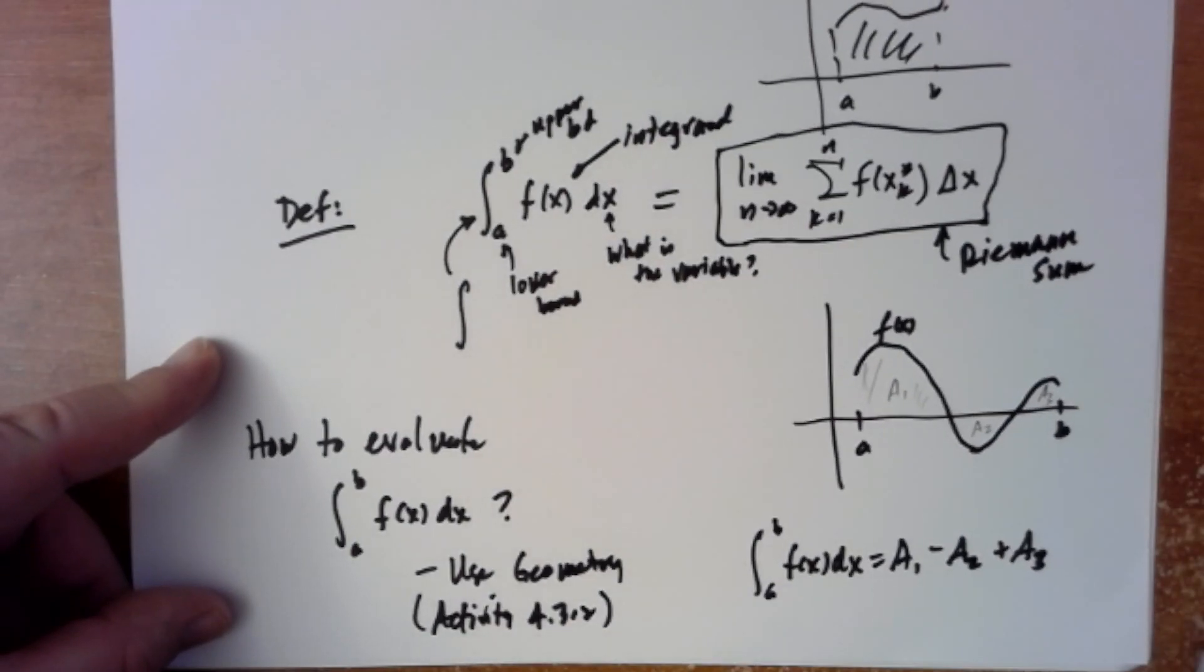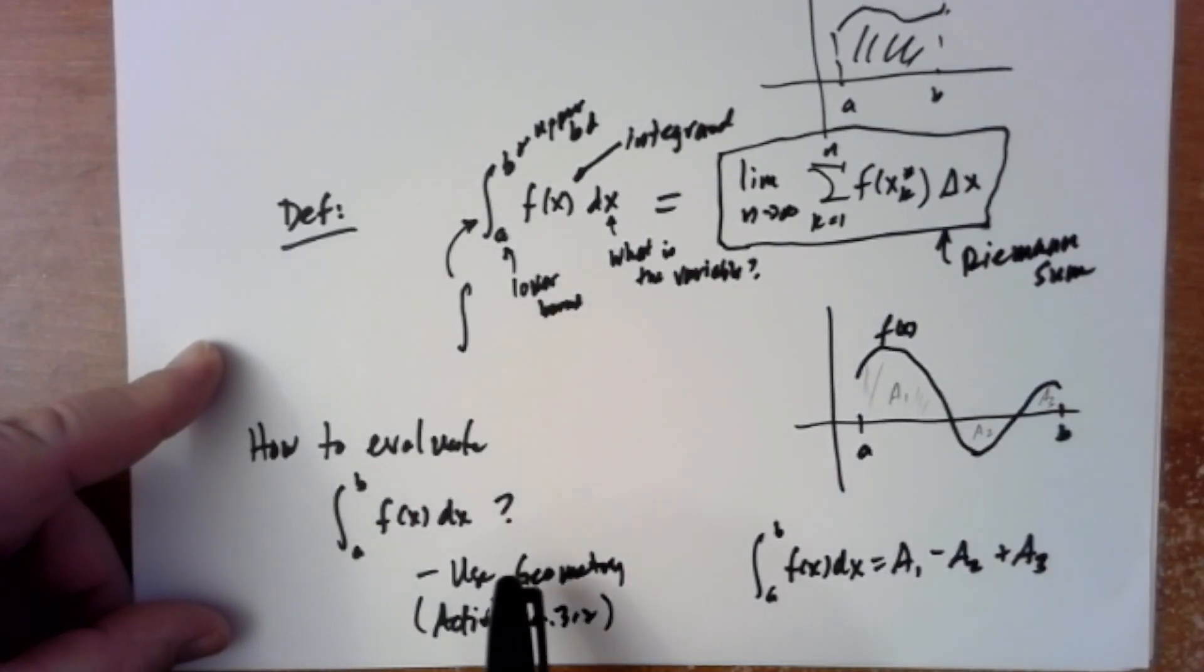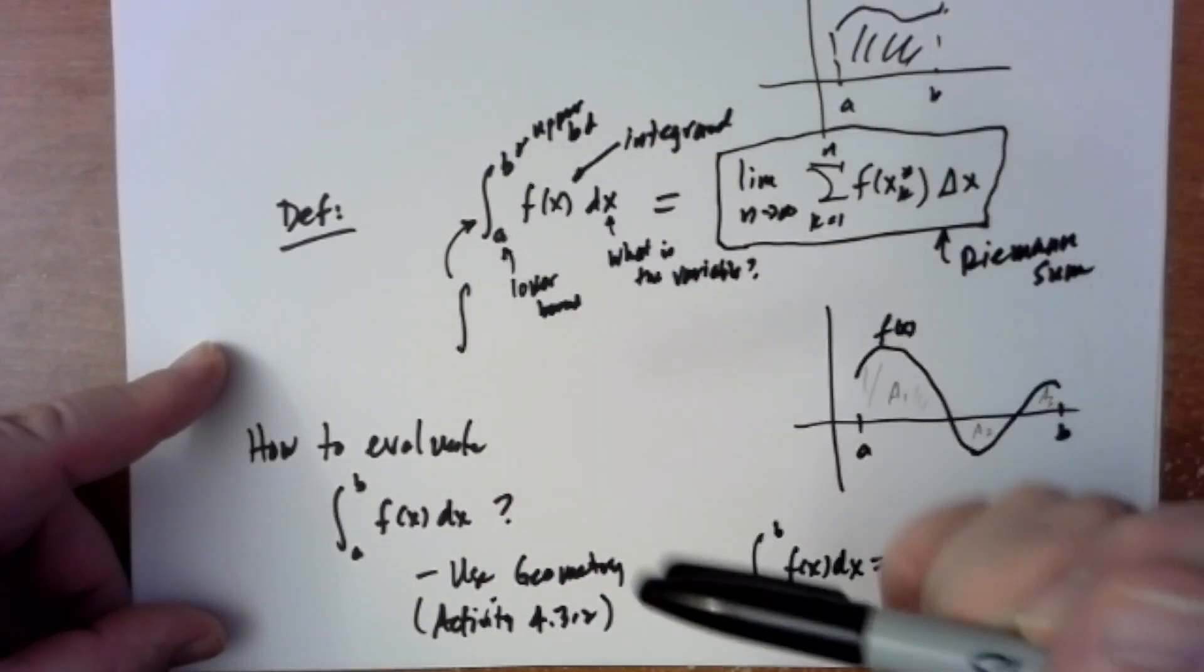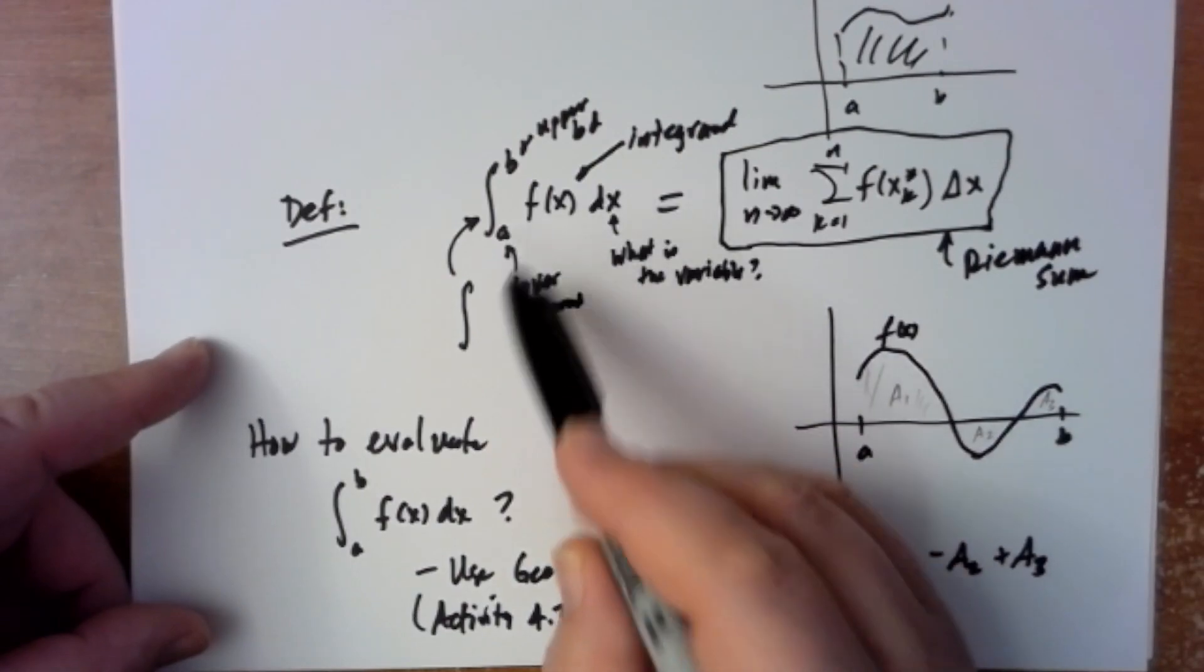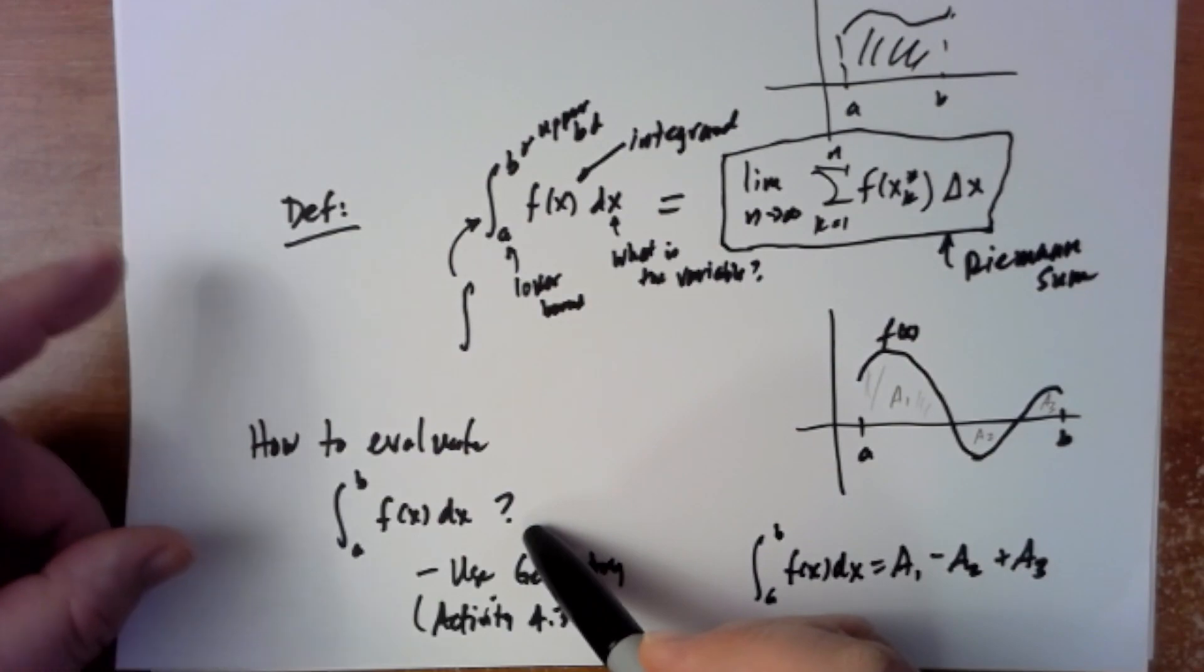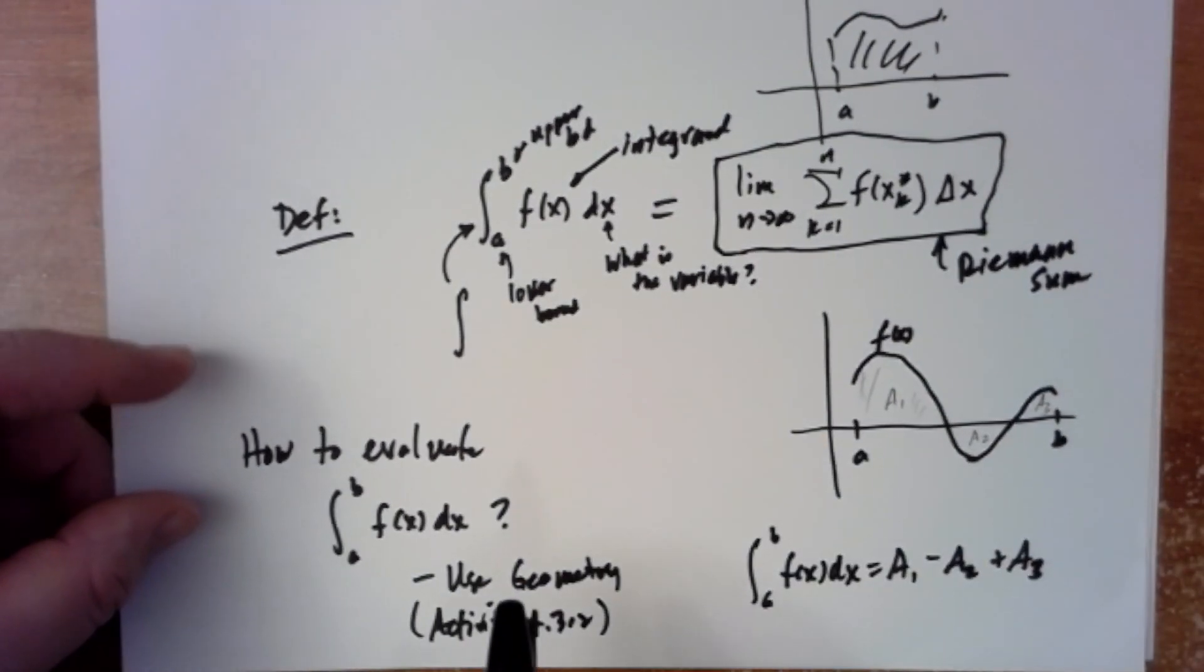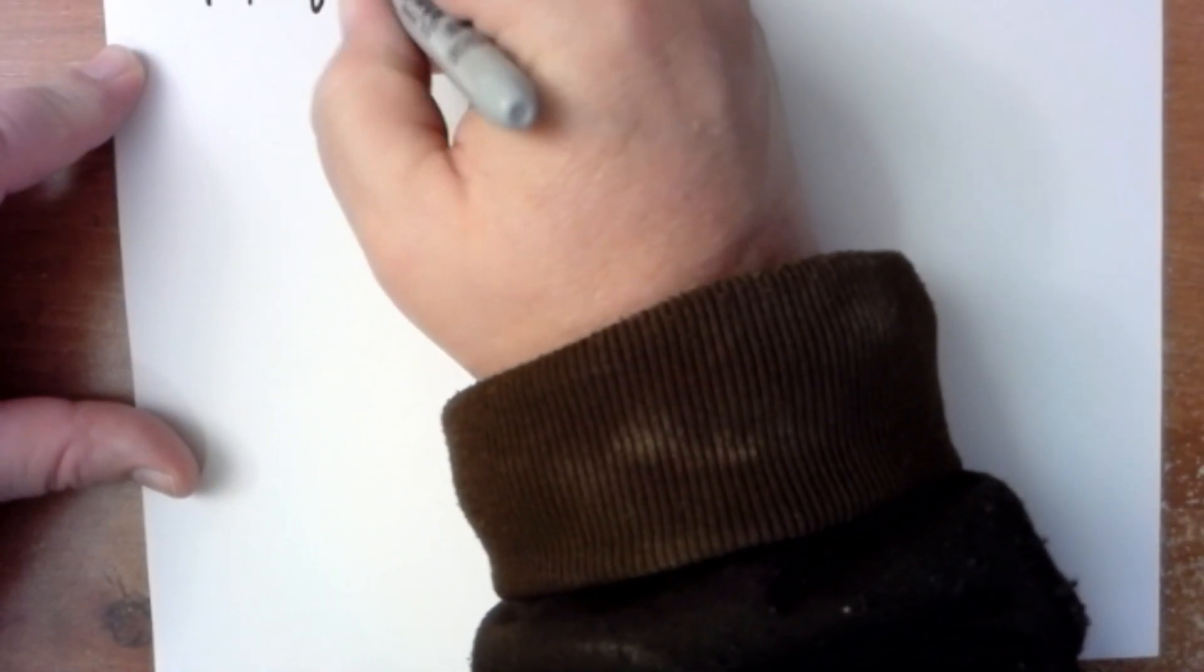I should also state that we're going to always assume that our function f(x) is continuous on the interval from a to b. Otherwise you can run into some trouble. Other classes you'll be able to talk about that - Calc 2 in particular is going to talk about lots of different techniques for evaluating this quantity. For us, we're just going to look at some real basic ones. Okay, so how about the next part here - properties of the definite integral.